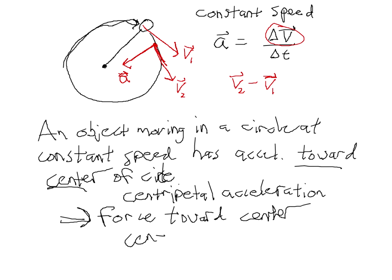That force toward the center is called centripetal force. It's important to understand, though, that centripetal force is not a new type of force — it's just a description that tells us what direction the force is pointing. For example, in the tennis ball drawing, the force pulling the tennis ball toward the center is the tension in the string. It's not some mysterious centripetal force — it's a real force caused by a real string. Centripetal just tells us the direction of that force, not what caused it.